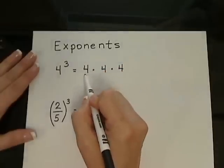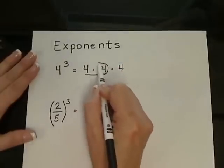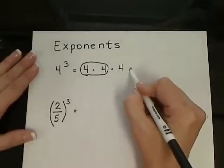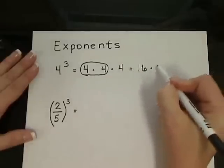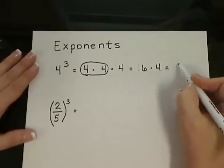Of course we'll multiply 2 at a time. So 4 times 4 gives me 16, and 16 times 4 gives me 64.